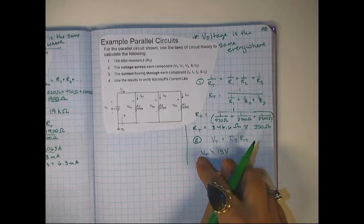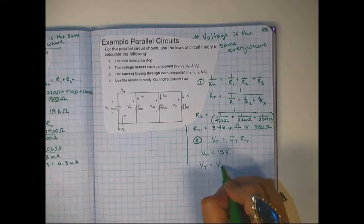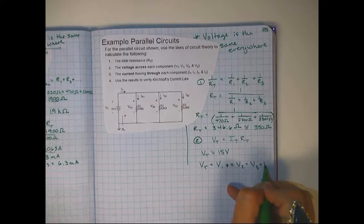So what that means is once I know the voltage total is 15, that means that not only is the voltage total, but voltage 1, voltage 2, voltage 3, they're all 15 volts.